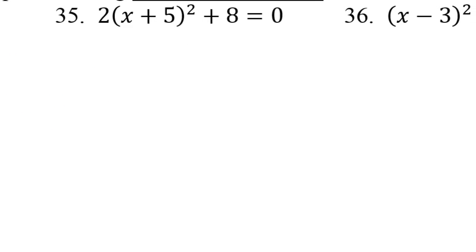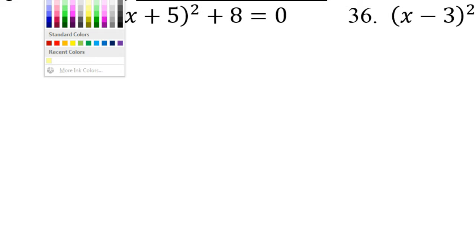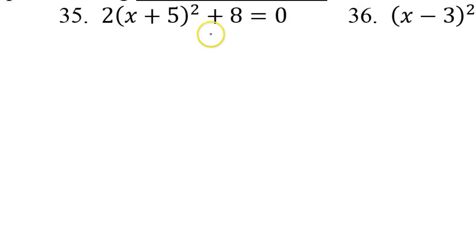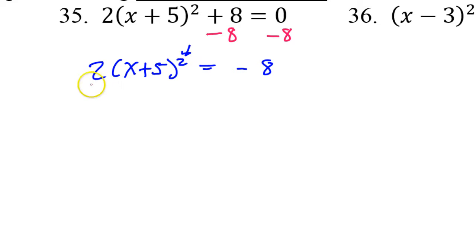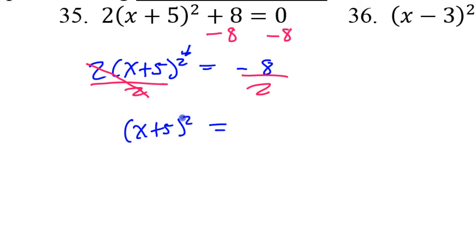Number 35. First step: subtract 8 from both sides. So far that leaves us with 2 times x plus 5 squared is equal to negative 8. What I don't want to do — make sure you do not distribute. There's a common mistake to distribute, but because it's squared, we won't do it. Instead, we will divide both sides by 2 to make that 2 go away. So I have x plus 5 squared equals negative 4.